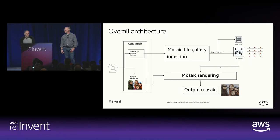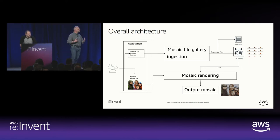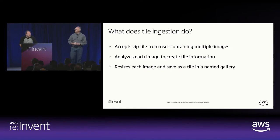Our application is broken down into three main subsystems. The first is how we add galleries — this is our mosaic tile gallery ingestion system. Then we have our mosaic rendering subsystem, which takes our gallery and a source image and renders our mosaic. And so our users can use these subsystems, we'll have a UI on top that allows users to log on and create mosaics or galleries. All of this is fully serverless — we're not managing any infrastructure as developers.